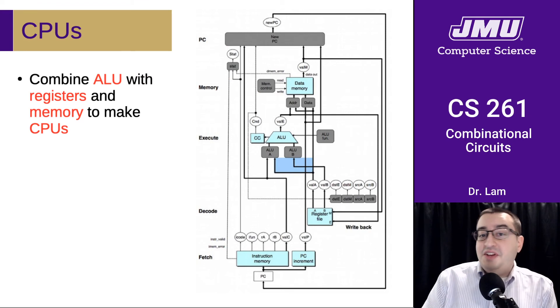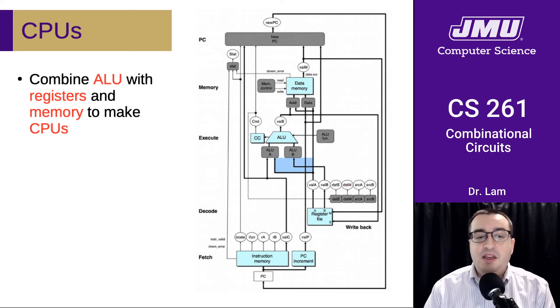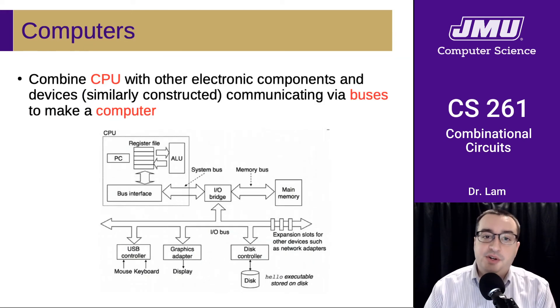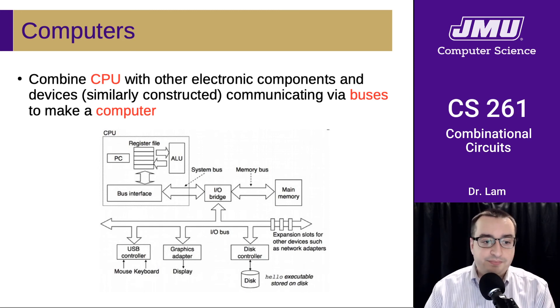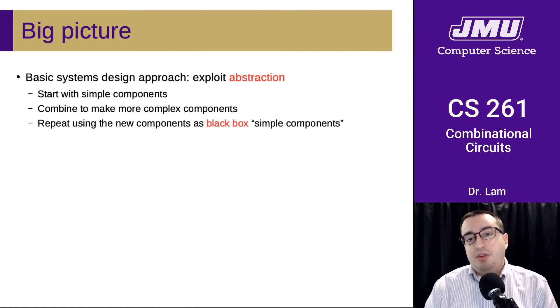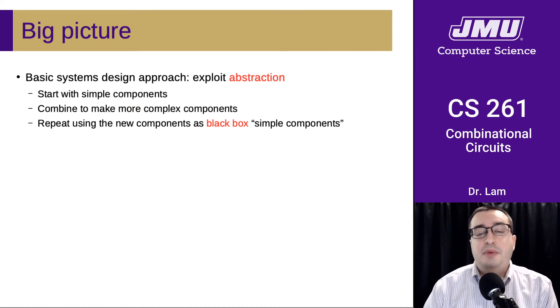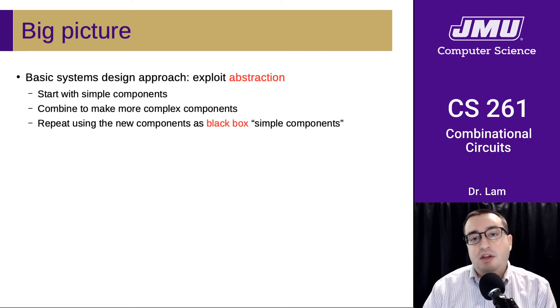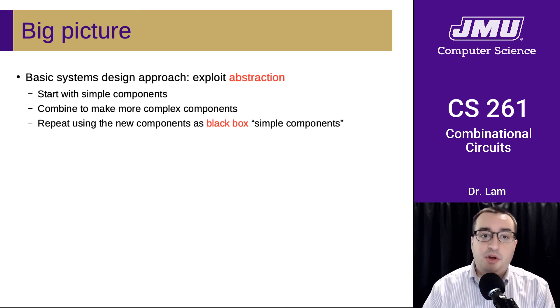Once we have all these other components, some of which we haven't built up yet, we're going to put them all together to build our CPU. And once we have our CPU, we're going to combine it with all of the other components in a computer. And we're going to finally have the thing that we think of as being a computer now that we've combined all these components together. So that's the big picture. Basic systems design is exploiting abstraction to build these complicated things out of smaller things.